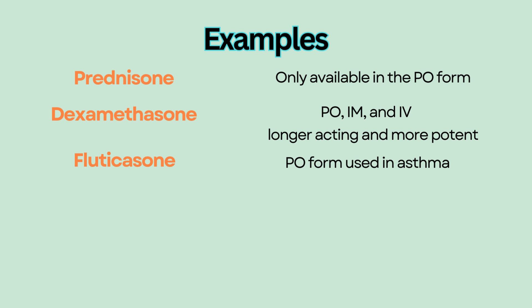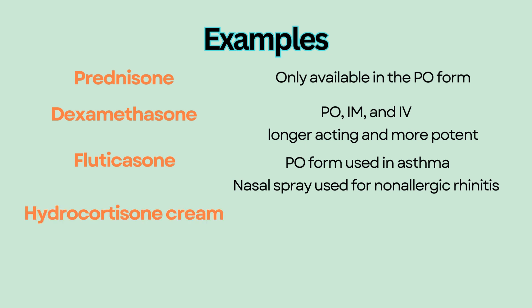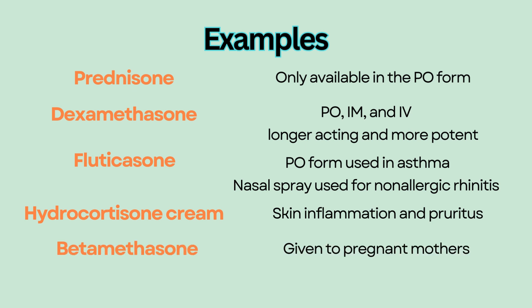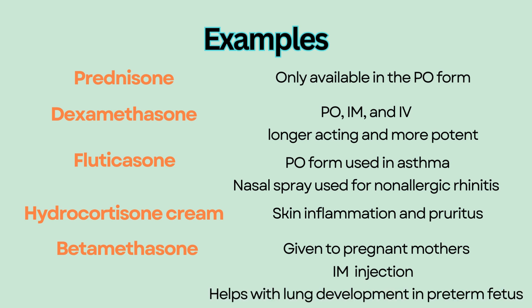Fluticasone is used as maintenance therapy in asthma and is also available as a nasal spray for non-allergic rhinitis. Hydrocortisone cream is used for skin inflammation and pruritus. Betamethasone is given as an IM injection to pregnant mothers at risk for preterm delivery to help with lung development in the preterm fetus. Most corticosteroids end with the suffix '-sone.'